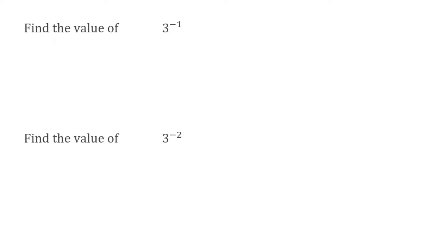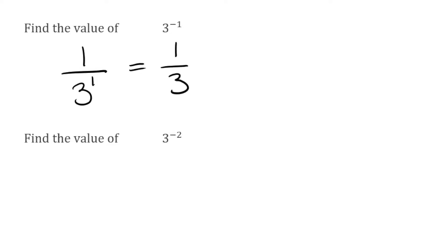Taking a look at this first example, I've got 3 to the power of negative 1. When we see that negative power, we know it's going to be a reciprocal. So what we want to write straight away is 1 over, and then we write the number again but this time without the negative — so 3 to the power of 1 on the bottom. We know 3 to the power of 1 is just 3, so this would be equal to 1 over 3, or a third.